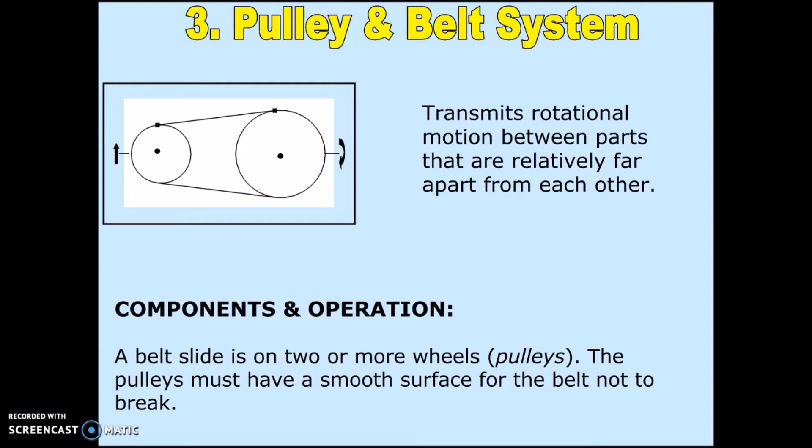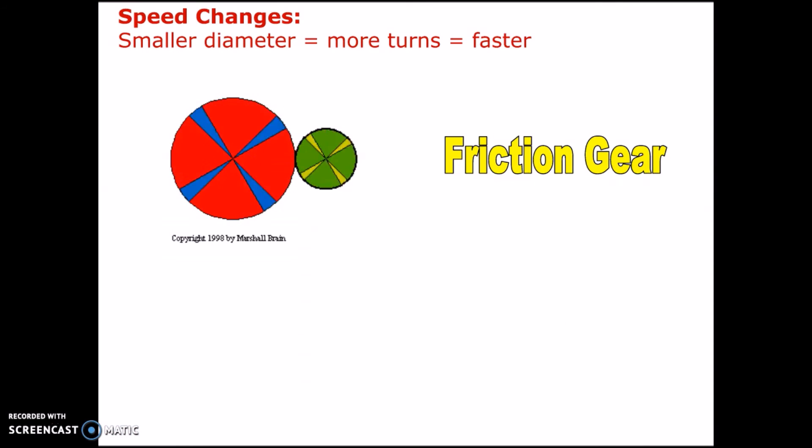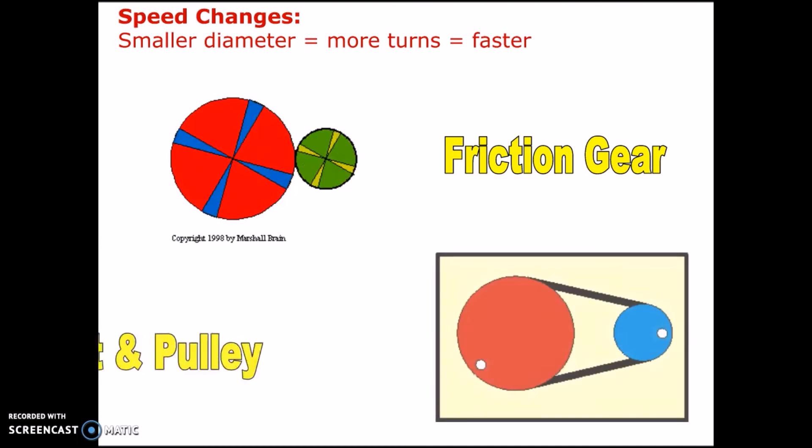The pulleys must have a smooth surface for the belt not to break. Notice that friction gear and belt and pulley are almost the same, except that in belt and pulley there's a distance between the driver and driven, and there's the intermediate belt connecting them.